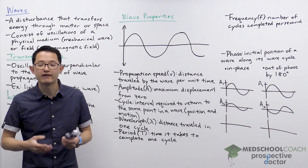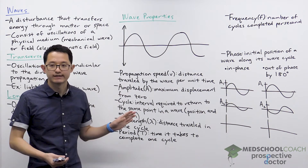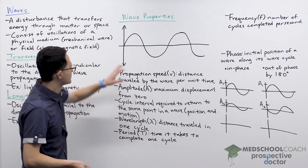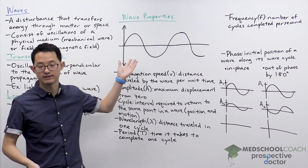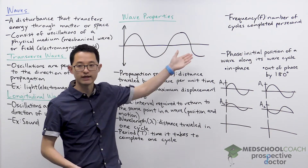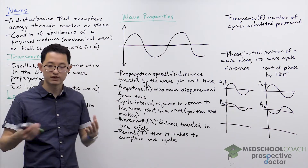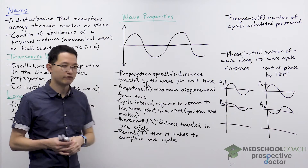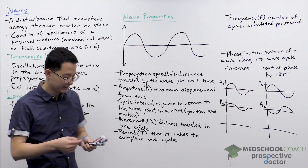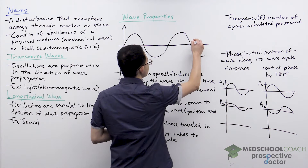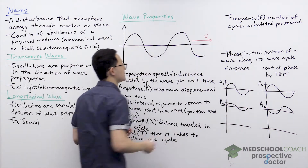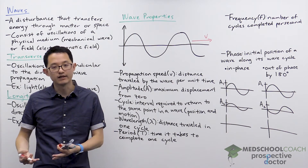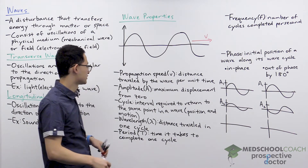Now let's talk about the different wave properties, which are frequently tested on the exam. First is propagation speed — the distance traveled by the wave per unit time, essentially how fast the wave is moving. For light, this would be 3 times 10 to the 8 meters per second, a very large propagation speed.